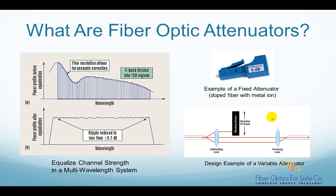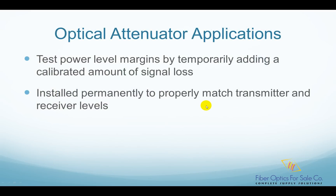Fiber optic attenuators are usually used in two scenarios. The first case is in fiber optic power level testing, where attenuators are used to temporarily add a calibrated amount of signal loss in order to test the power level margins in a fiber optic communication system. In the second case, attenuators are permanently installed in a fiber optic communication link to properly match transmitter and receiver optical signal levels.